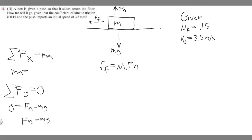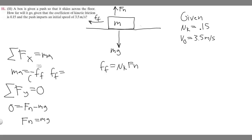Now in the x direction, we only have one force — the force of friction. It's going to the left, and left is negative, so it's going to be minus F sub f equals ma. We want the force of friction by itself, so we multiply both sides by negative one, giving us F sub f equals minus ma.